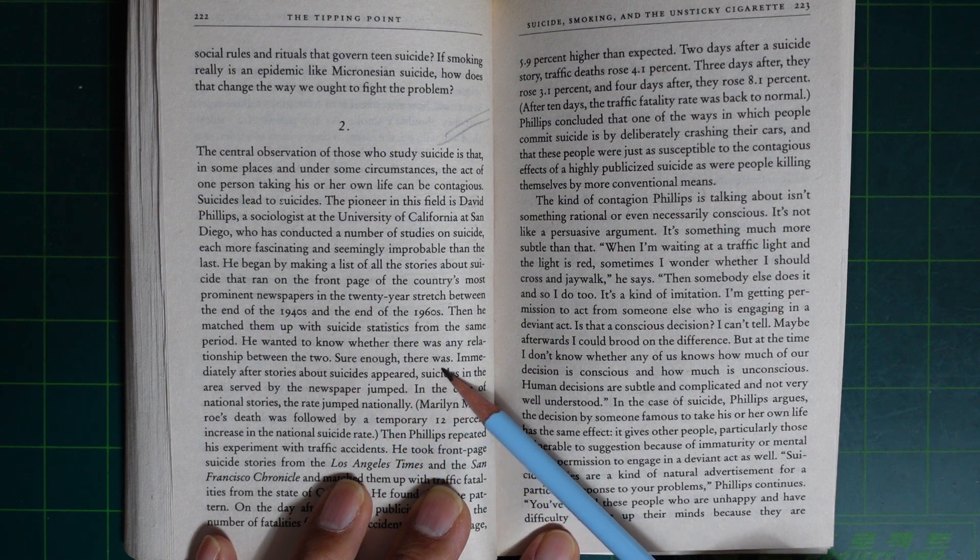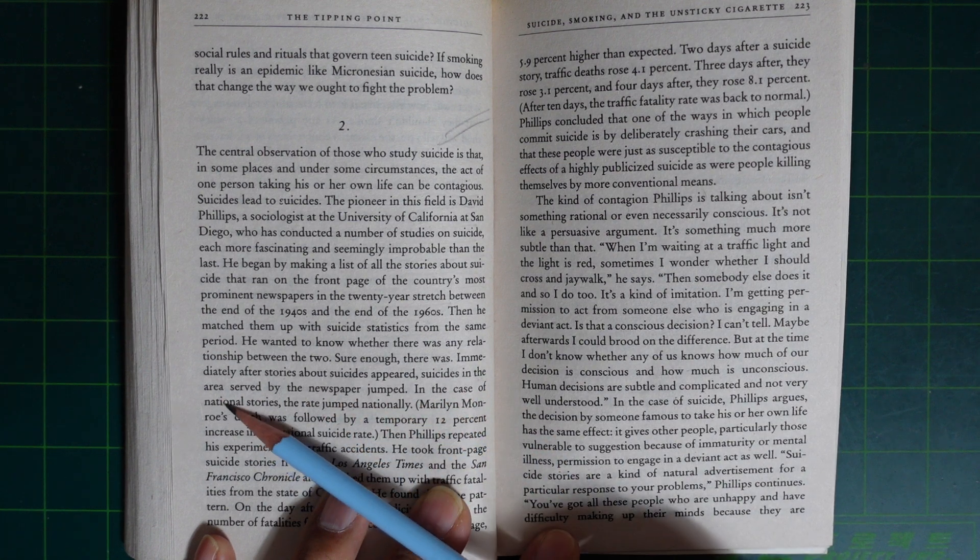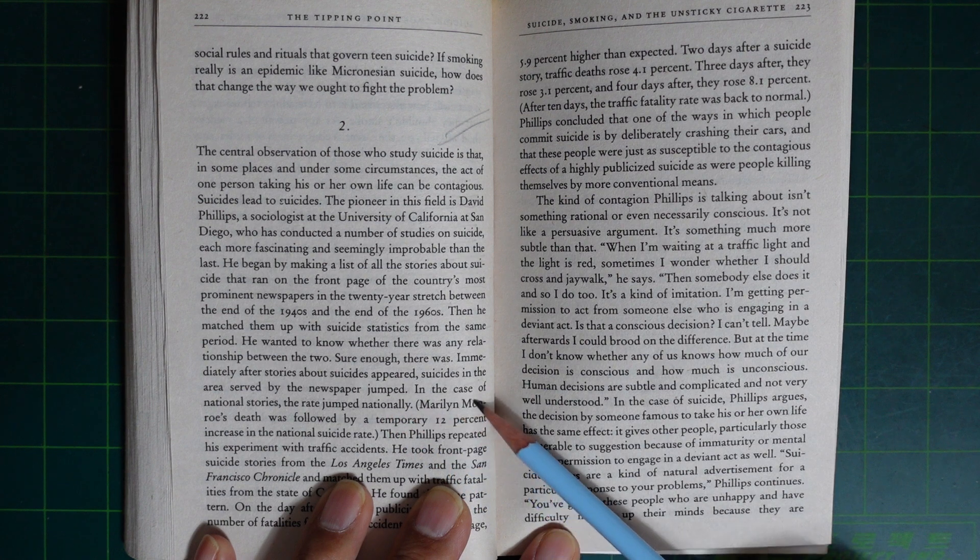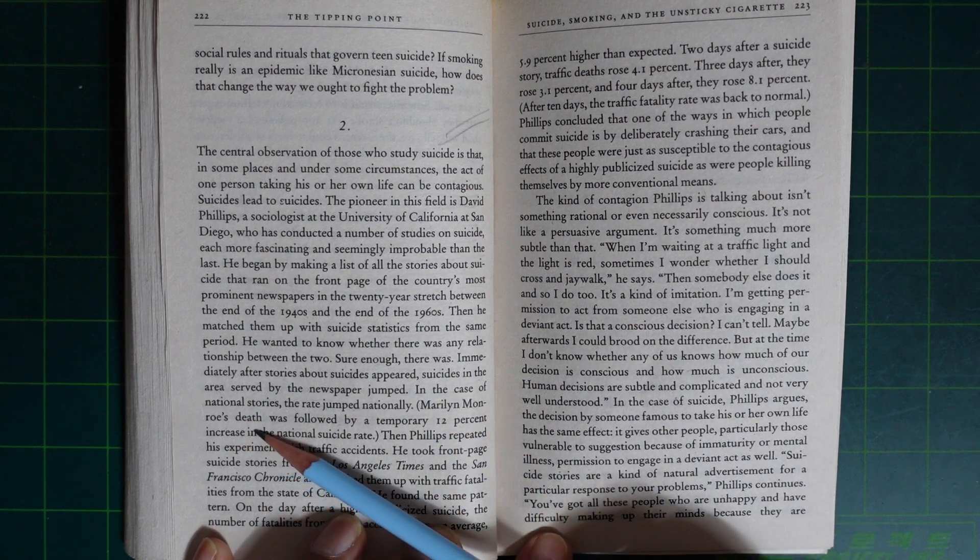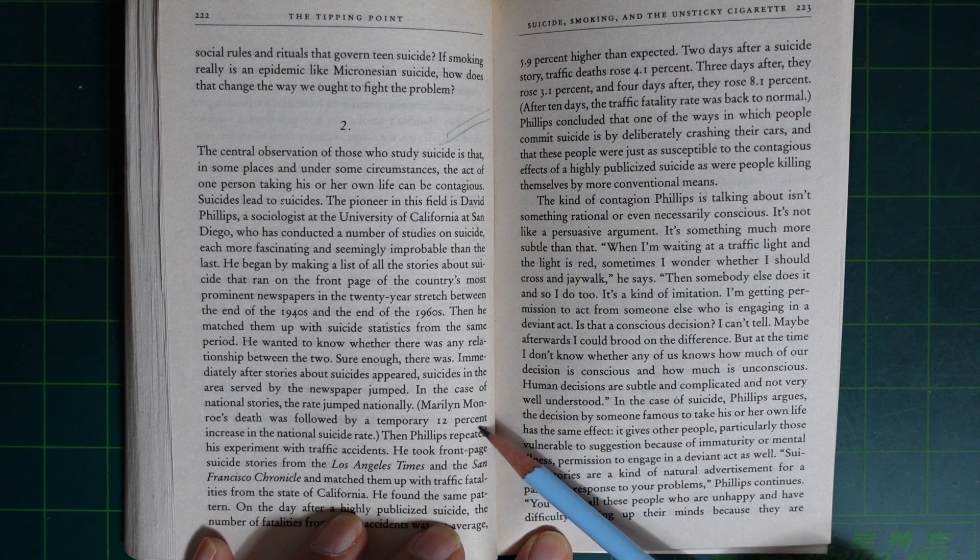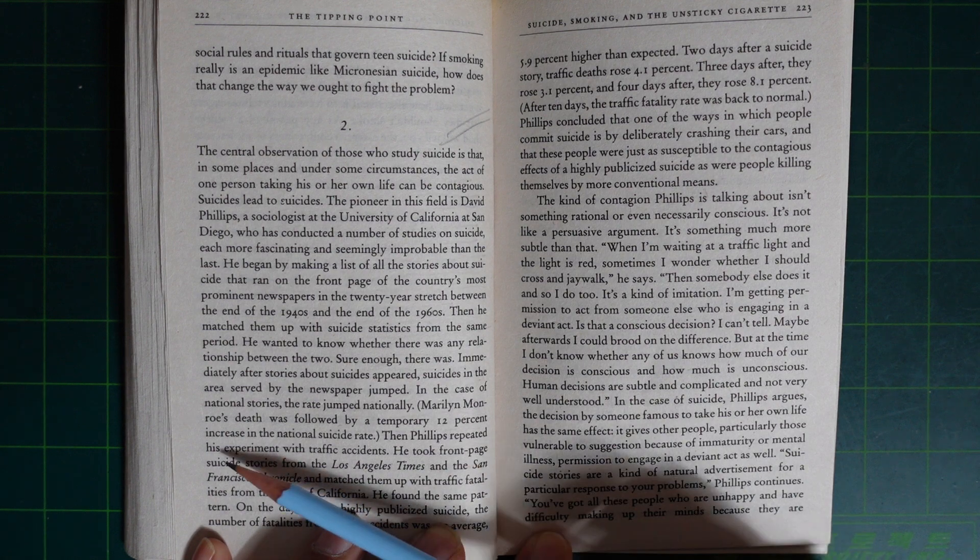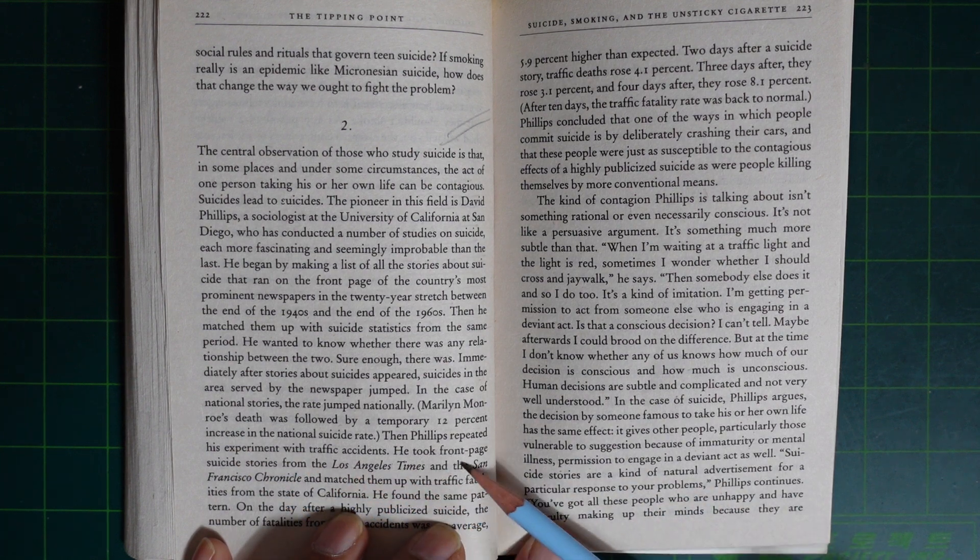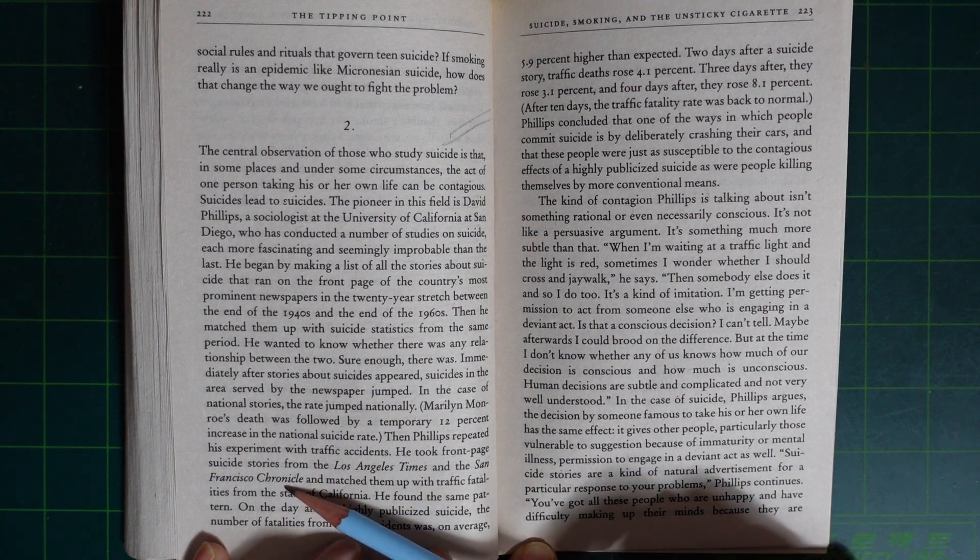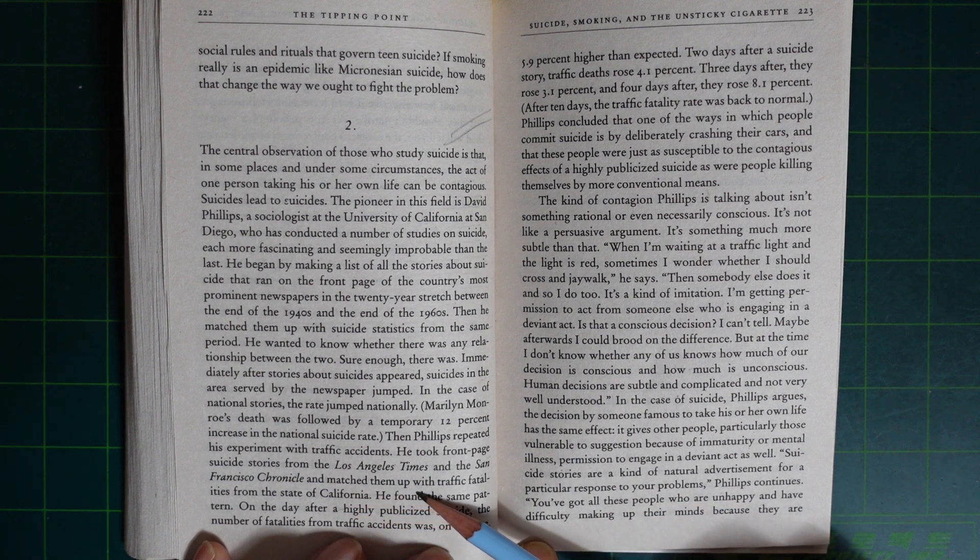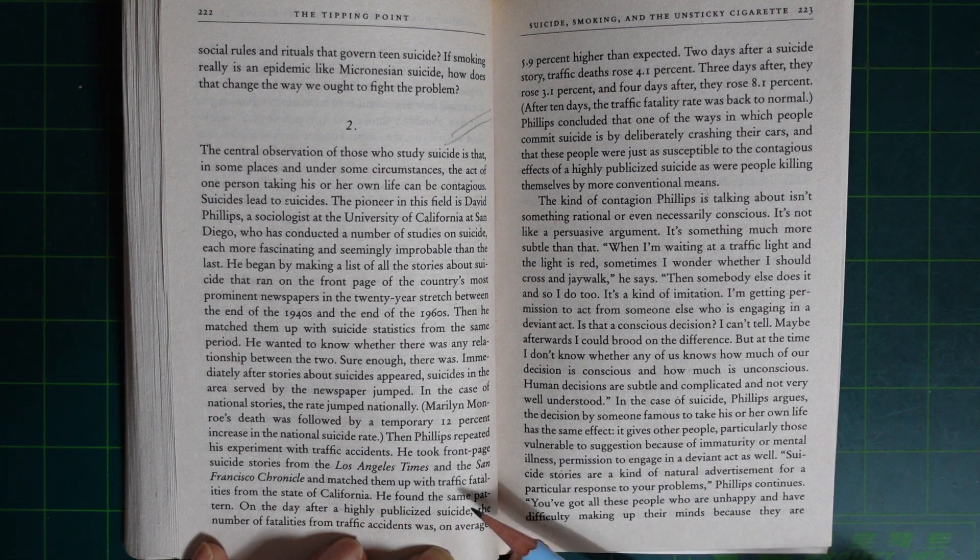Sure enough, there was. Immediately after stories about suicide appeared, suicides in the area served by the newspaper jumped. In the case of national stories, the rate jumped nationally. Marilyn Monroe's death was followed by a temporary 12 percent increase in the national suicide rate. Then Phillips repeated his experiment with traffic accidents. He took front page suicide stories from the Los Angeles Times and San Francisco Chronicle and matched them up with traffic fatalities from the state of California. He found the same pattern.